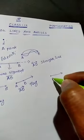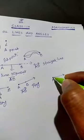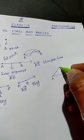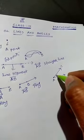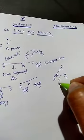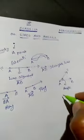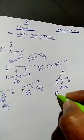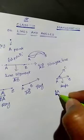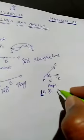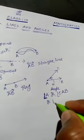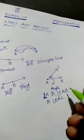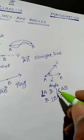Now observe: AB is one ray. With the same initial point A, I draw one more ray — AC. The space between these two rays is what we call an angle. We write it simply as angle A, because at point A you are getting an angle. You can also write it as angle CAB or angle BAC.